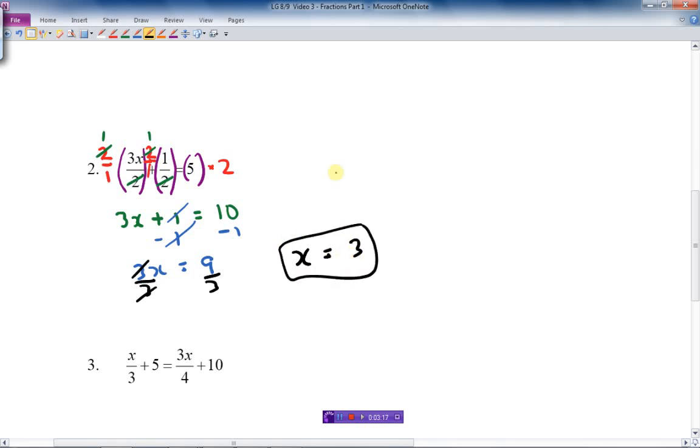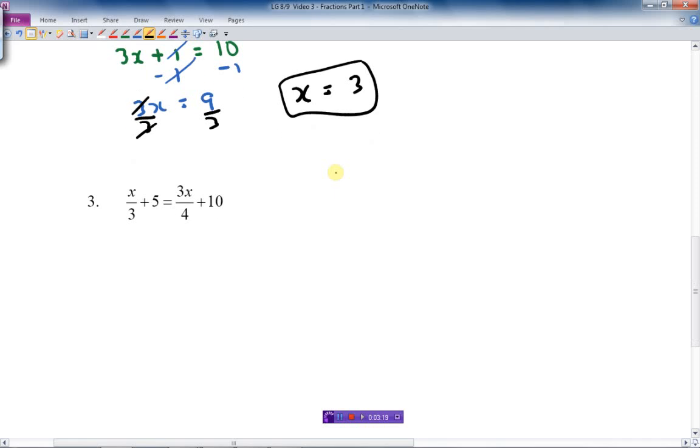Okay. So let's do that one more time with one other question. I'm just going to write it out over here to get a little bit more space. x over 3 plus 5 equals 3x over 4 plus 10. I'm leaving a little space out here so we have lots of room.